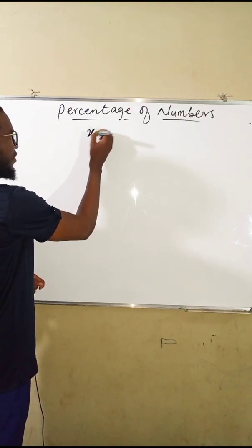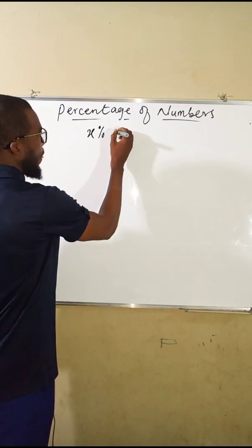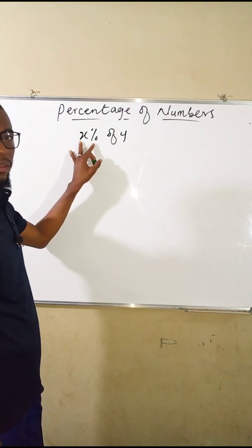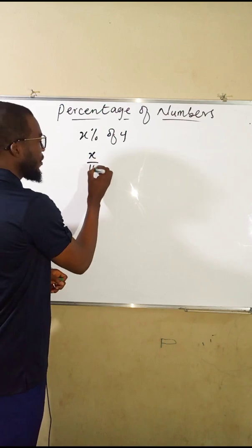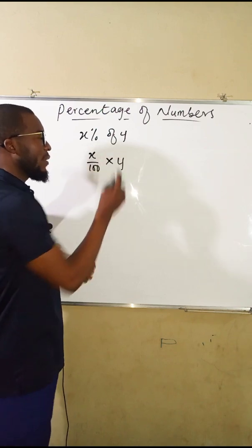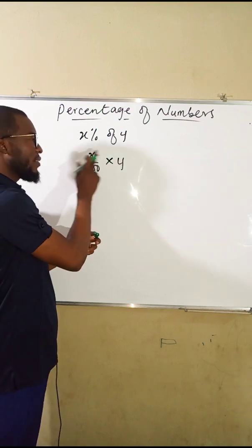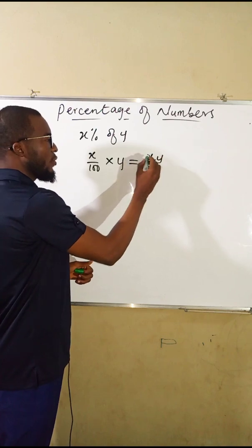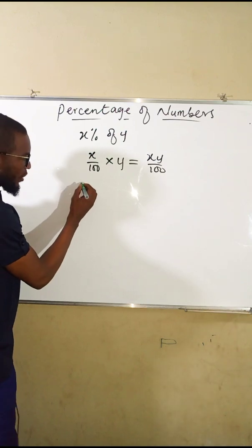Suppose we want to find X percent of Y. X percent can be written as a fraction: X over 100. And 'of' in arithmetic means multiplication, times Y. If you multiply this together it will be X times Y divided by 100, which is XY over 100.